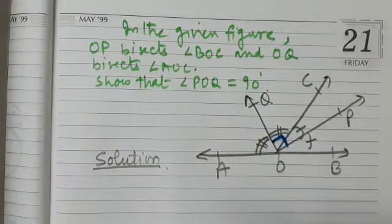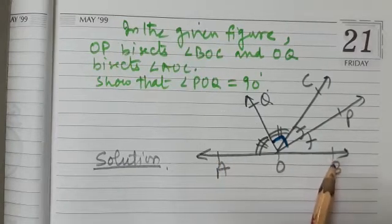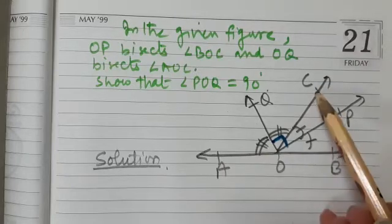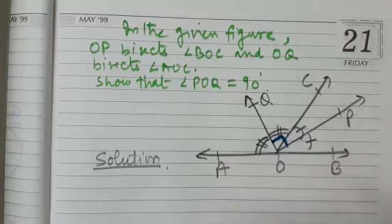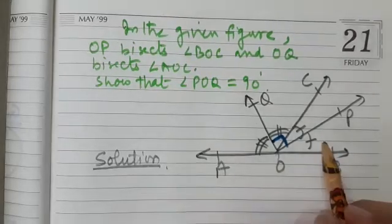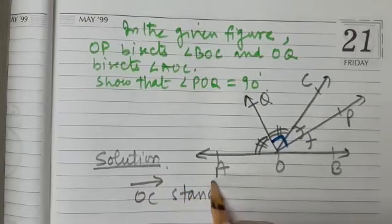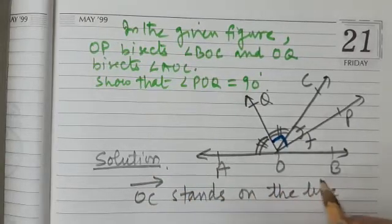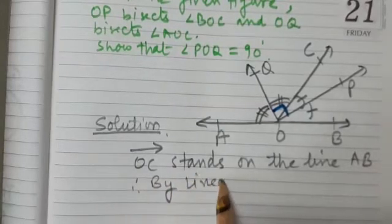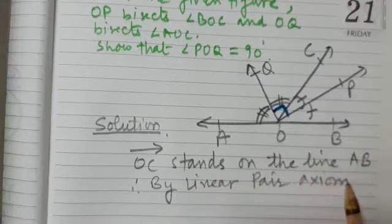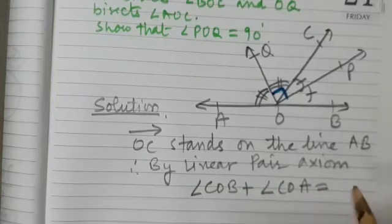Observe carefully — this ray OC stands on the line AOB. So by the linear pair axiom, we can say angle COB plus angle COA equals 180 degrees. We will begin the solution from here: OC is a ray that stands on line AB, therefore by linear pair axiom, angle COB + angle COA = 180 degrees.